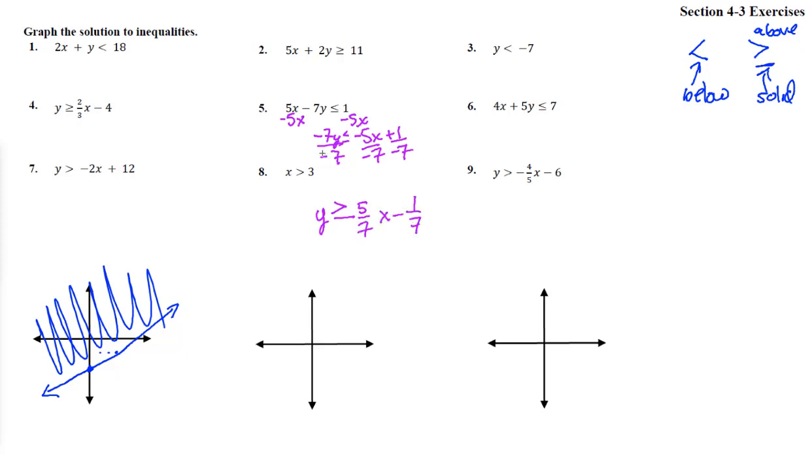So it's now y is greater than or equal to positive 5 seventh x minus 1 seventh. Now be sure we understand that this guy and that guy are connected, and switch around. So we start at negative 1 seventh, which is just barely tiny, and then we go slope is 5 sevenths, so from there we go up 1, 2, 3, 4, 5, over 1, 2, 3, 4, 5, 6, 7.